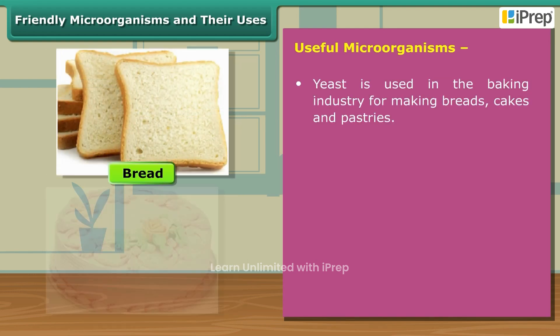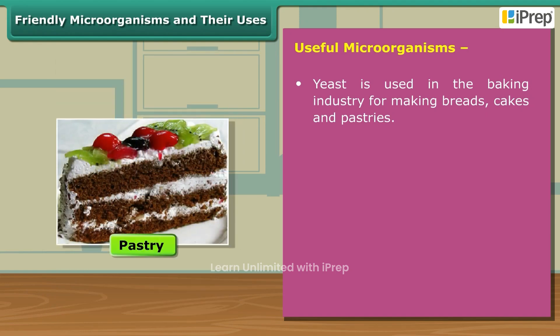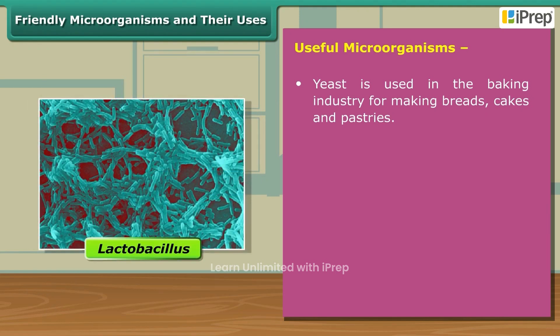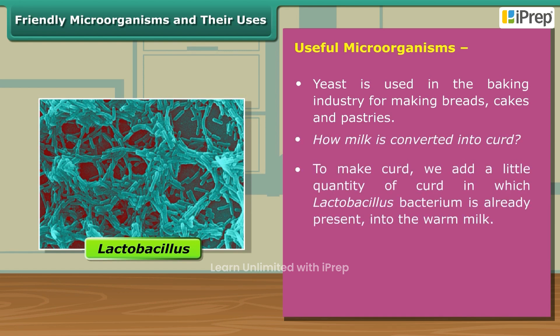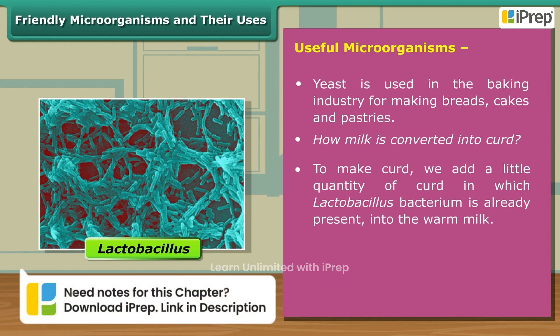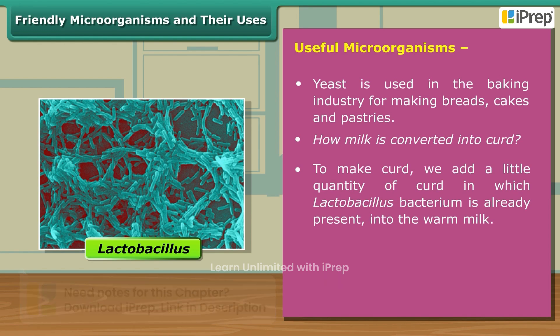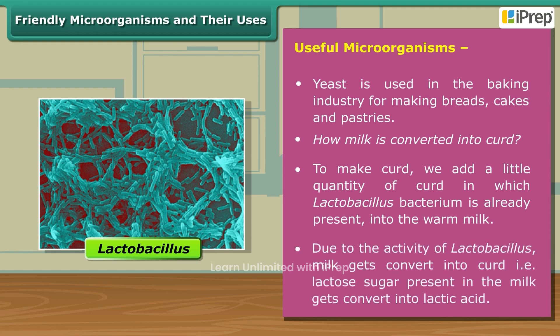The bacterium Lactobacillus is useful to make curd from milk. To make curd, we add a little quantity of curd, in which Lactobacillus bacterium is already present, into warm milk. Due to the activity of Lactobacillus, milk gets converted into curd — that is, the lactose sugar present in the milk gets converted into lactic acid.